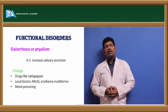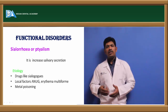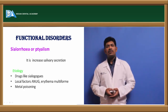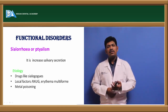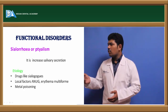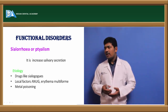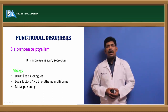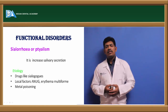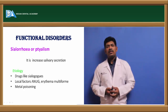Sialorrhea could be inherent — due to large hypoplasia or hypertrophy of salivary glands during development — or it could be induced by drugs like sialogogues, which temporarily increase salivary production. Local factors such as erythema multiforme, which causes increased salivation, and metal poisoning — predominantly lead, bismuth, or arsenic — also result in increased salivary production and its sequelae.